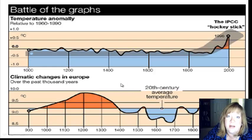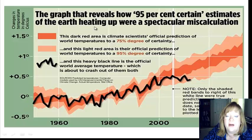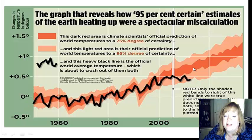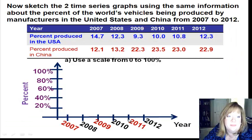These 95%-certain estimates of the Earth heating up turned out to be a spectacular miscalculation — it shows where the temperature actually is now versus where they predicted it would go. Now, let's start talking about time series graphs.